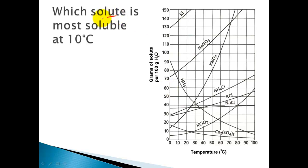The question is, which solute is most soluble at 10 degrees Celsius? You go down to the temperature, there's 10 degrees, and follow that line straight up until you hit the highest compound. The compound that is most soluble is potassium iodide. At 10 degrees Celsius, I can dissolve roughly 136 grams of it in 100 grams of water. So that would be the most soluble.